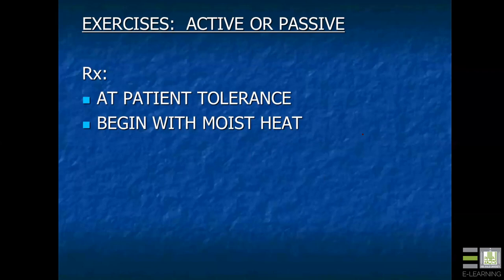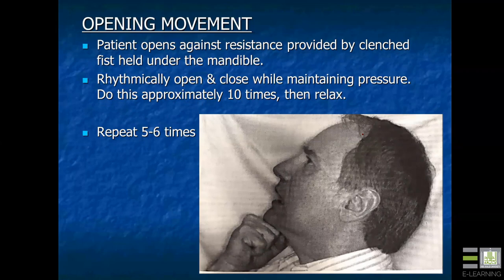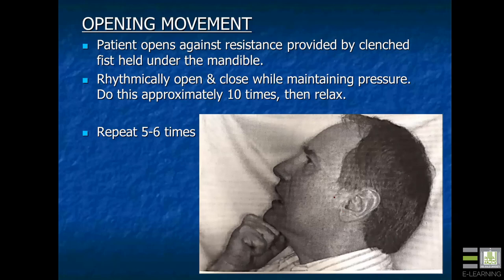Exercises are used quite frequently, beginning at patient tolerance and following moist heat. For clicking and for synergistic relaxation of the masseter and closing muscles, you can stabilize the mandible with the fist and open against resistance provided by the clenched fist held underneath the mandible — repeat five or six times. This is helpful in patients with reciprocal clicking and in patients with deep masseter pain, as it requires relaxation of the masticatory muscles while working against resistance with the opening muscles.